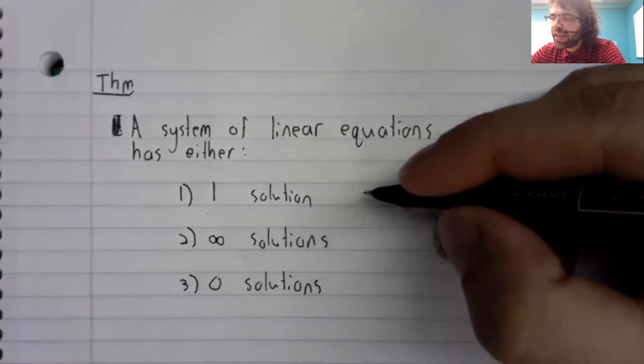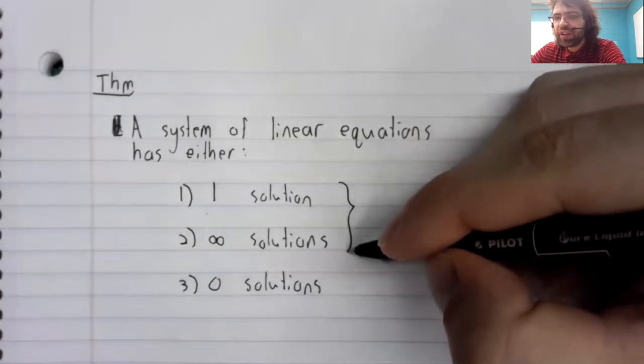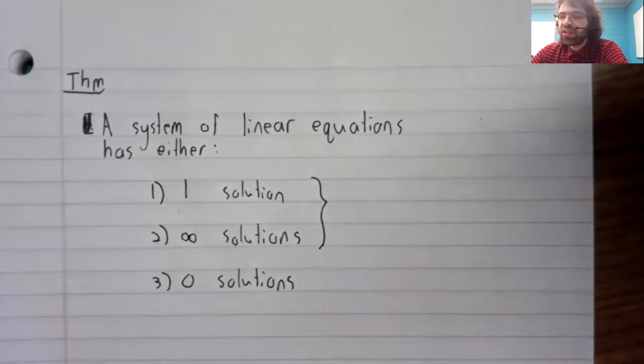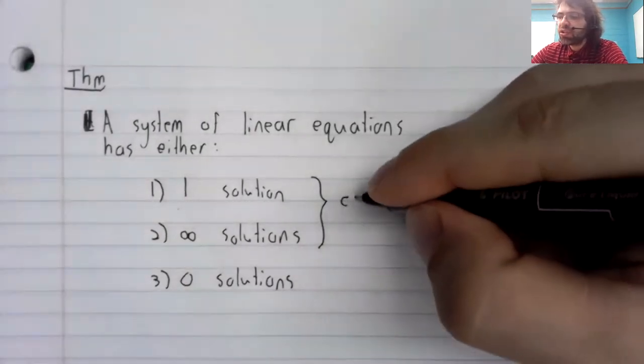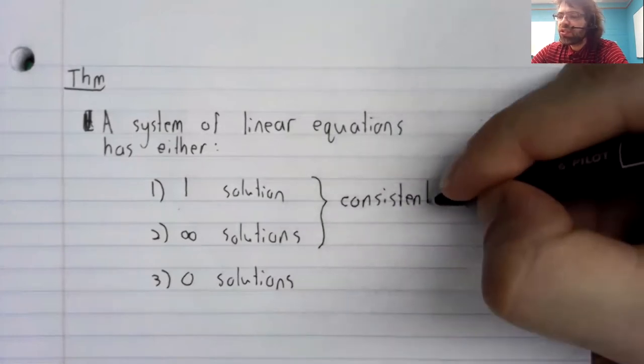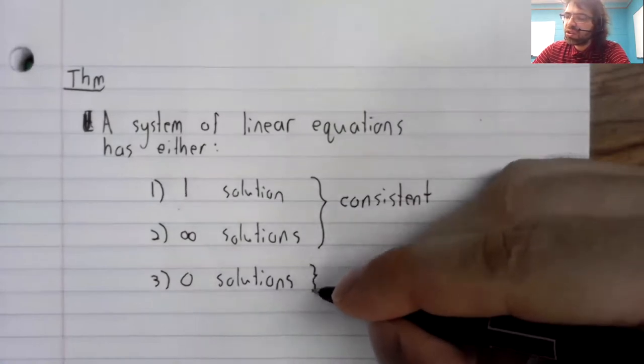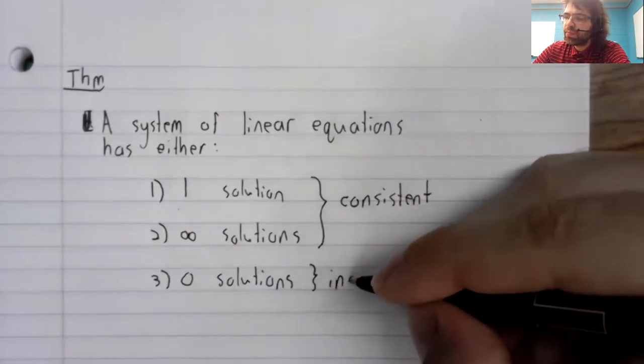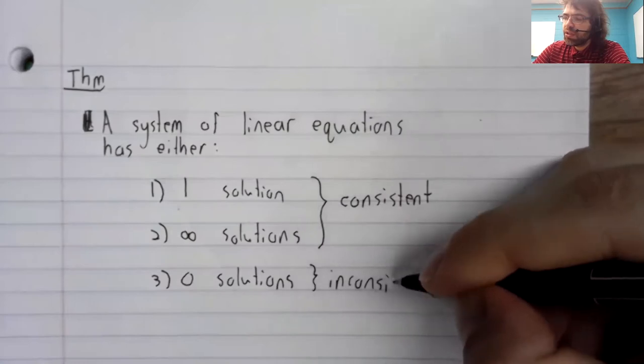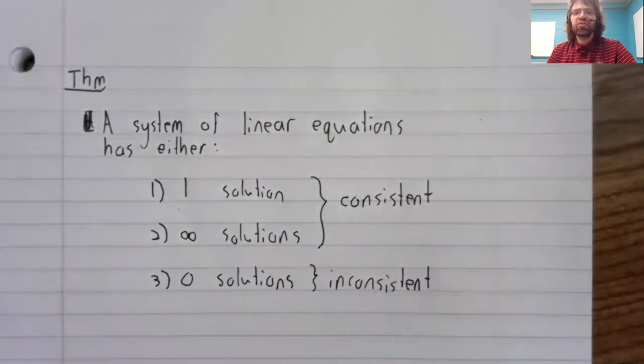And one last definition, or pair of definitions. A system that has solutions is said to be a consistent system. A system without solutions is said to be inconsistent.